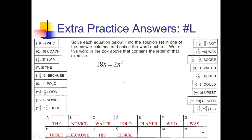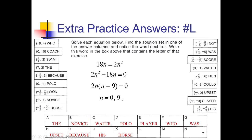Following up that last problem with this one — if you know what you're doing, much faster. Getting it in standard form: 2n squared minus 18n equals 0. It looks like I have a common factor of 2n that I can take out, leaving n minus 9. Setting each equal to 0 and solving: if 2n equals 0 then n must be 0, and 9 minus 9 is 0 so there's my other answer. 0 and 9 — that's 'a could' going in spot L.